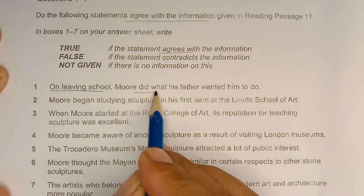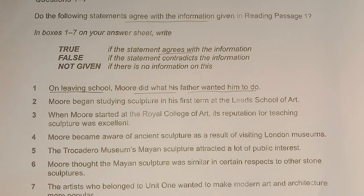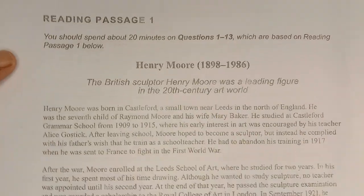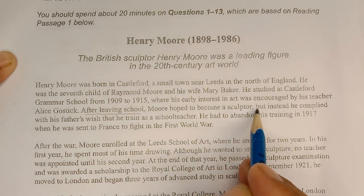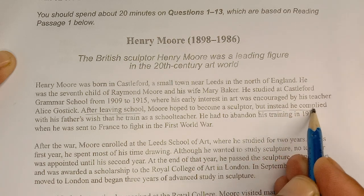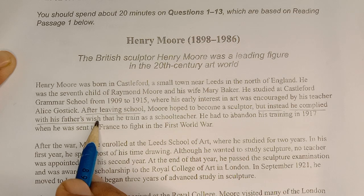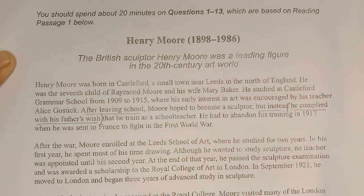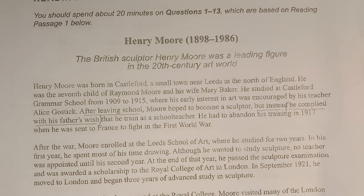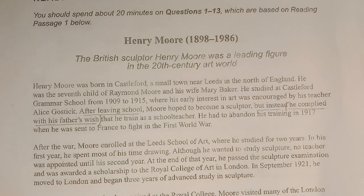The very first statement: 'On leaving school, Moore did what his father wanted him to do.' Moore نے وہی کیا جو اس کا فادر چاہتا تھا۔ After leaving school, Moore hoped to become a sculptor, but instead he complied with his father's wish. اس نے اپنے باپ کی خواہش کے مطابق ہی کیا — the statement matches exactly.